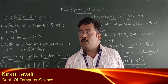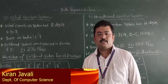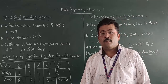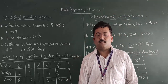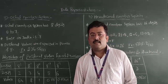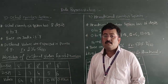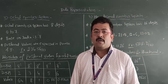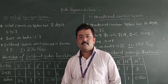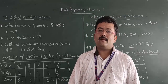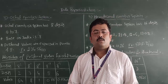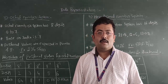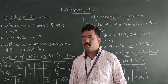Hello students, this is the continuation part of a data representation chapter. In the last class, we discussed the decimal number system as well as the binary number system. The decimal number system contains 10 digits from 0 to 9 and its base value is 10. The binary number system contains only 2 digits, 0 and 1, and the base value of the binary number system is 2.